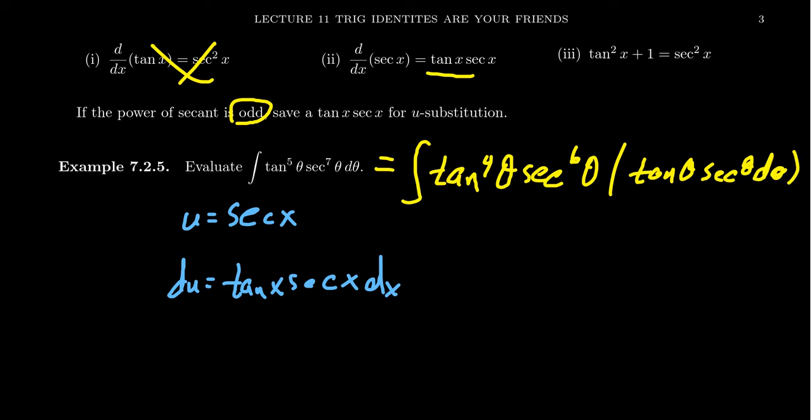Notice this tangent secant d theta, we're setting this aside to be our du. I noticed I was writing x earlier with our variables. That was a mistake on my part. They should be thetas. So the tangent theta secant theta d theta will become our du.